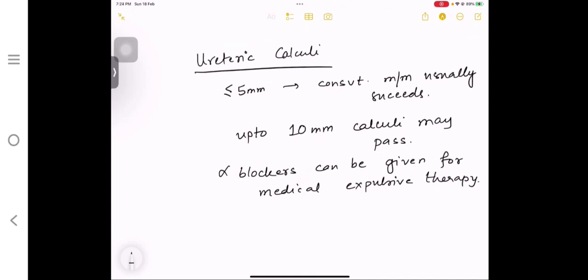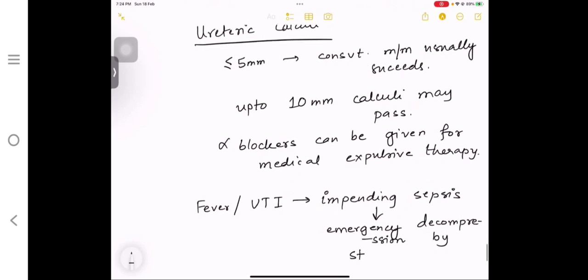If the size is 6 to 10 mm, then the calculi may pass, but it may not pass also. So what will you do? If it does not pass, you have to move for interventions. On medical treatment, you have the alpha blockers because it will constrict the ureteric sphincter and allow the stone to pass.